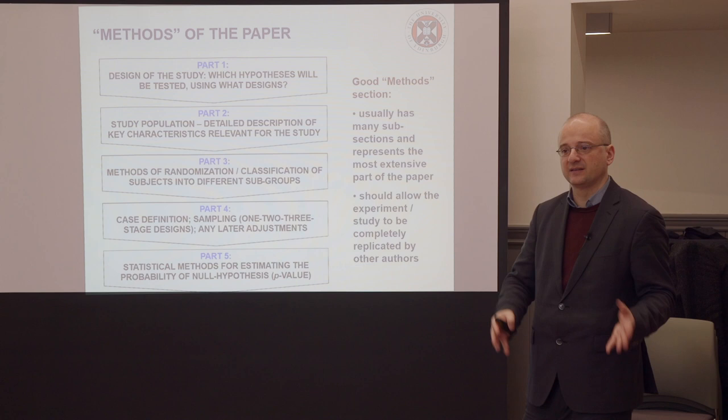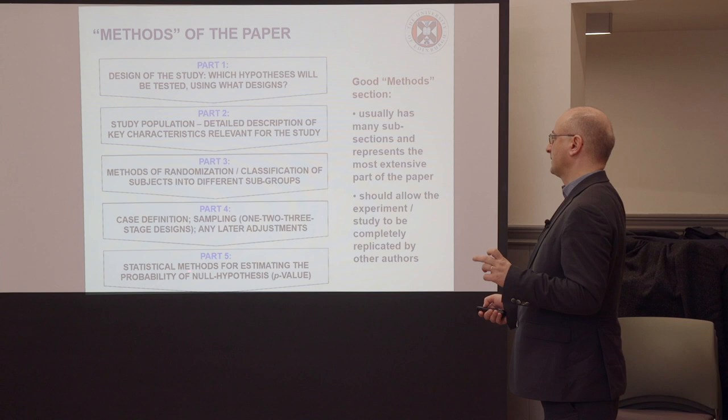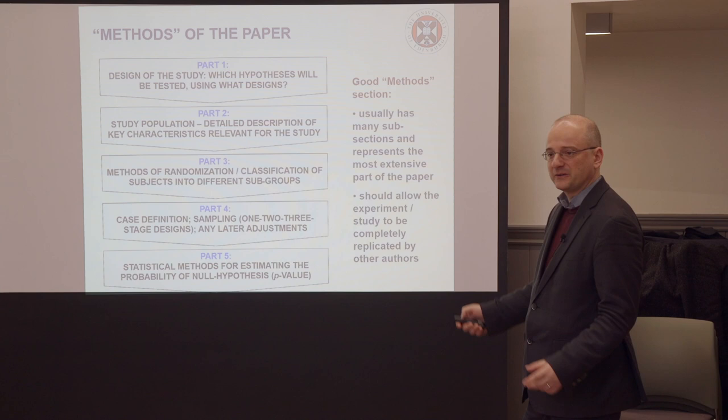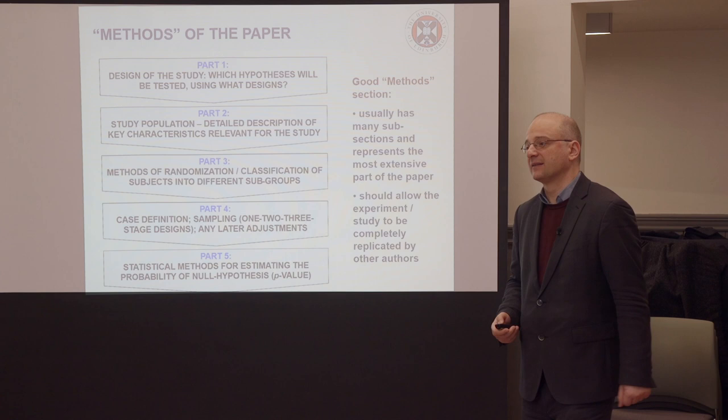Because all these things could matter and change the end conclusion. Finally, in the fifth part you report the exact statistical methods for estimating probability. You can see that if you're doing research, the vast majority of important things is actually in designing and conducting the study; the statistical part only comes at the end and tells you how uncertain you can be in your result.